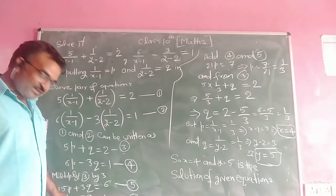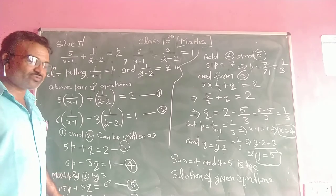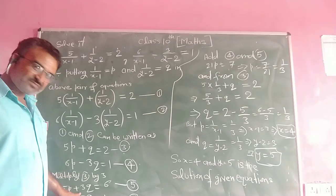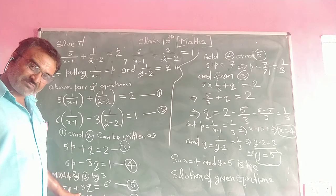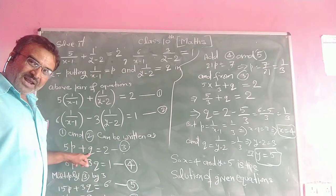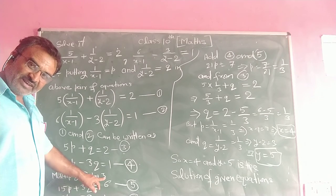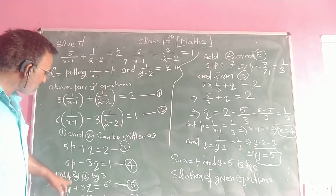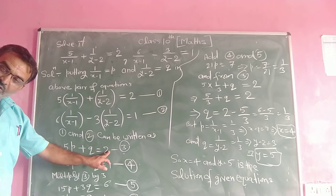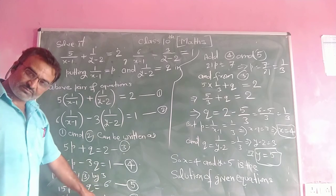Now, we solve these two pairs of linear equations. We apply the elimination method. Multiply equation 3 by 3 to get equation 5: 15p plus 3q is equal to 6. Equation 4 is: 6p minus 3q is equal to 1.